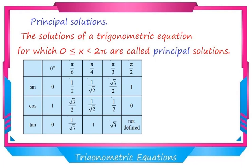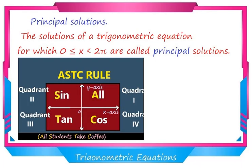The second thing is you should know the ASTC rule: in the first quadrant all trigonometry functions are positive; in the second quadrant sin and its reciprocal are positive, the rest are negative; in the third quadrant tan and its reciprocal are positive, the rest are negative.